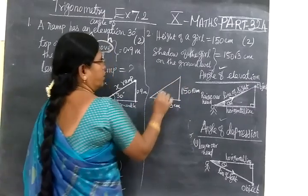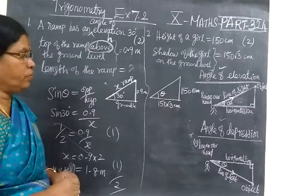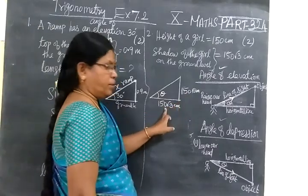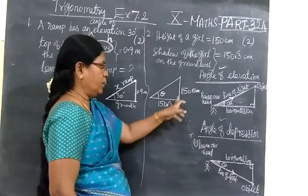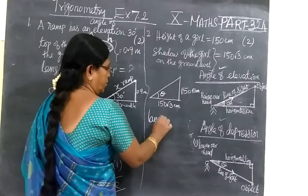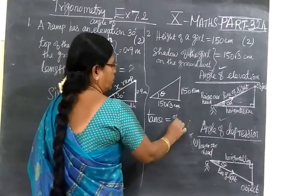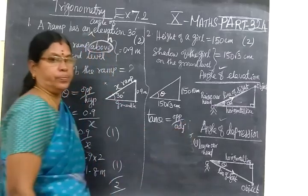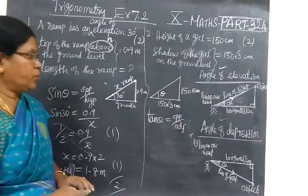Angle of elevation we want to find. So opposite side and adjacent side - the trigonometric ratio connecting opposite side and adjacent side is known as tan theta. Tan theta equals opposite by adjacent.